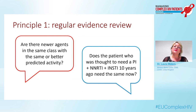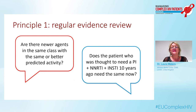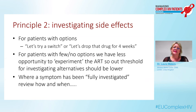Moving on to some principles for managing toxicity. Principle one is undertaking regular evidence review: are there newer agents predicted to be as or even more active than the drug you think may be causing a toxicity? Paradigms change — does the patient who was thought to need a protease inhibitor, an NRTI, and an INSTI ten years ago need the same now, or is there evidence to support giving something simpler with fewer drugs?